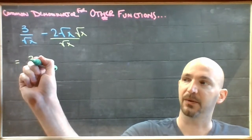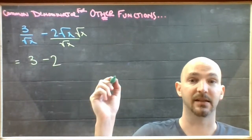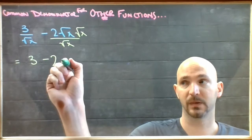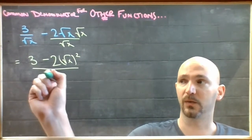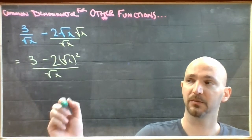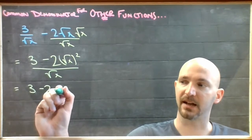So what I'd end up with this one, I'd end up with 3, subtract 2, and a root x times a root x is a root x squared, all over the common denominator. But of course, root x squared is just x.